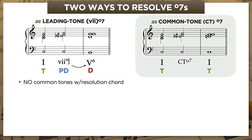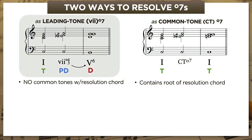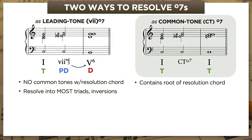By contrast, the common-tone diminished seventh already contains the root of the chord it resolves to — that's the common tone, and it's almost always in the bass voice. Leading-tone diminished sevenths are extremely common; they can resolve into pretty much any consonant chord in any inversion. By comparison, common-tone diminished sevenths are pretty rare, especially before 1825 or so, and they almost always resolve into just one chord — a root-position tonic triad.